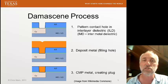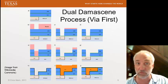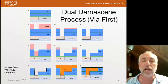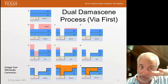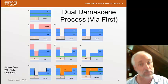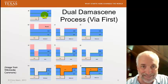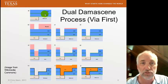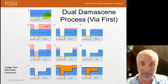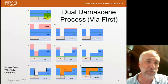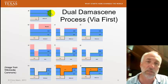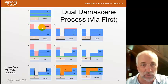We use a slight variation called the dual damascene process. It looks like it has a lot of steps, but it's really the same thing done a couple of times. We're creating an entire layer of copper metallization, which has two parts: a set of wires, and a set of vias filled with copper connecting one layer of wires to the previous layer. We put down two layers of dielectrics — ILD (interlayer dielectric) and IMD (intermetal dielectric) — with an etch stop layer in between, typically silicon nitride. We form a pattern with photoresist for the via, and etch the via through both layers, stopping at the barrier layer. We strip the resist and we've got our via through the interlayer dielectric.